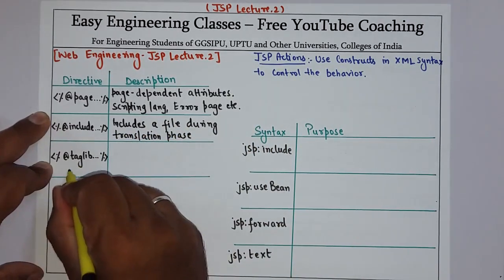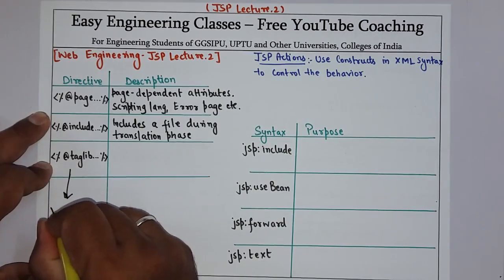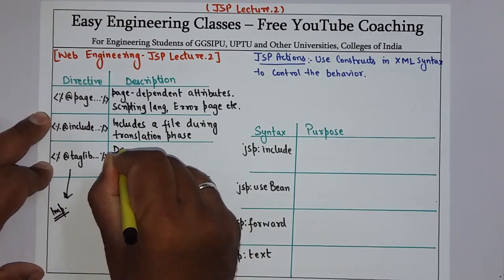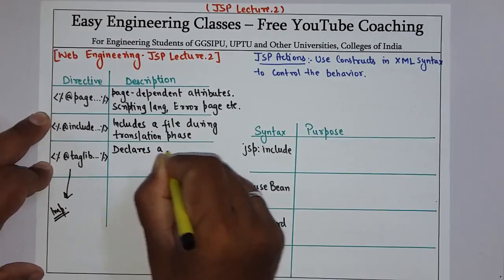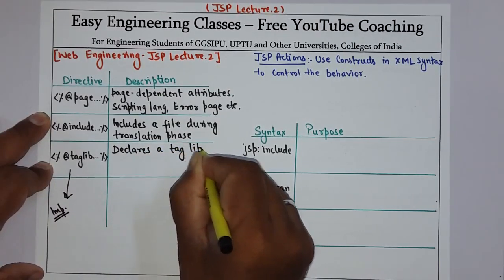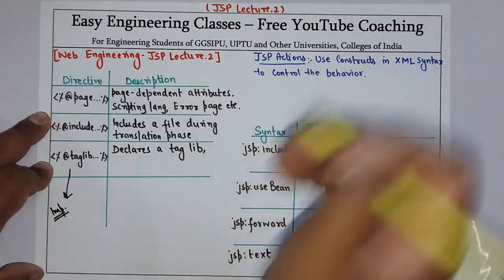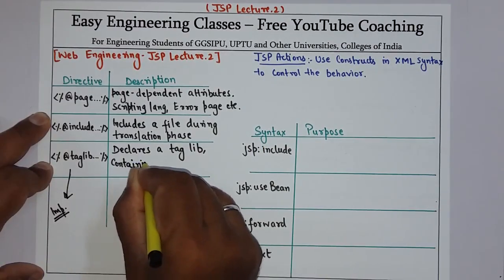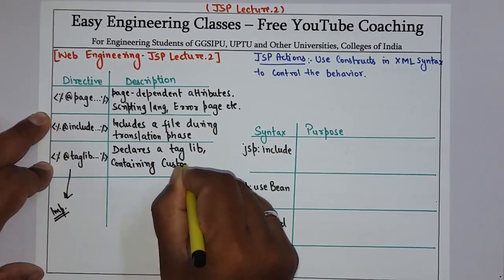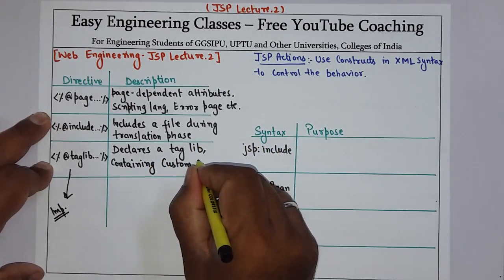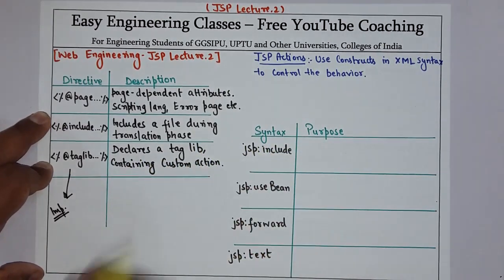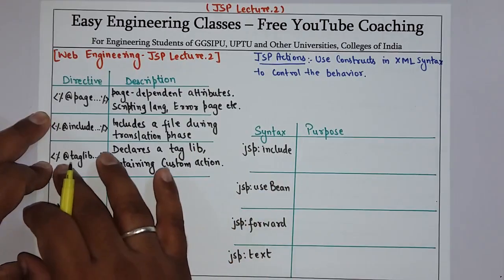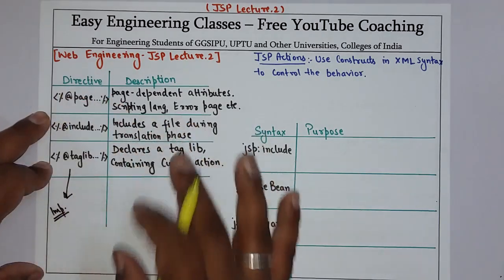Then we have at-the-rate taglib. This is very important, and we will use this when we discuss custom tags in JSP. It declares a tag library containing custom actions used in the page. So if you want to declare a tag as per your requirement, you can create a tag with the required action or functionality, and use this at-the-rate taglib directive to use that particular tag.